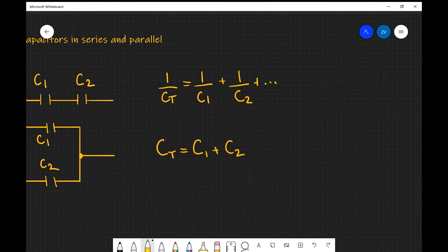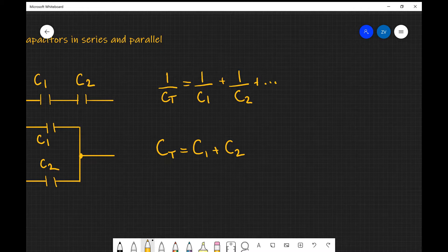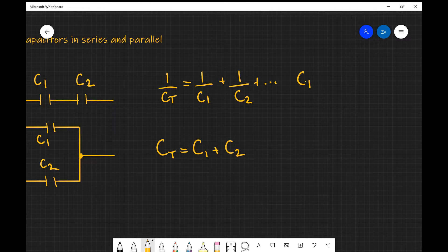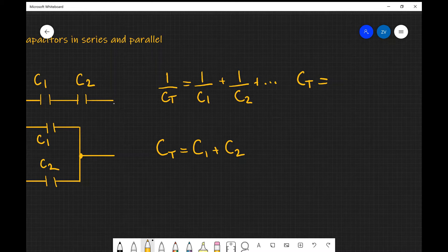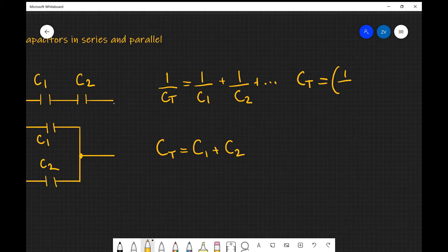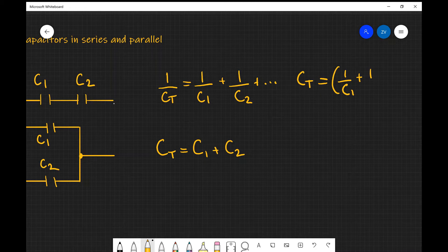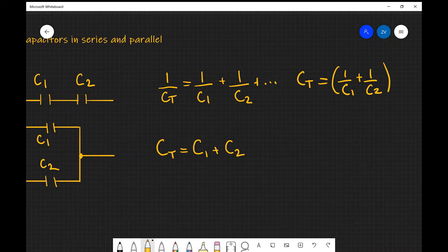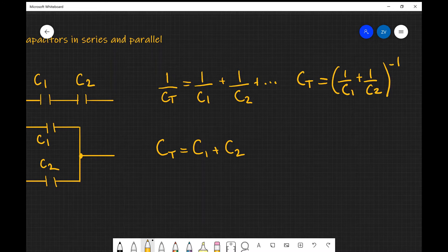The easiest way to calculate this with a calculator would be just to say that C total will be brackets 1 over C1 plus 1 over C2 raised to the power of minus 1, because we've flipped the whole fraction around. And if we input that into a calculator, this will be by far the easiest.